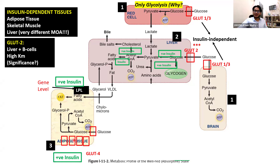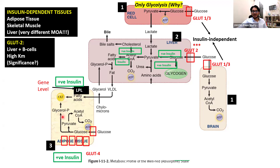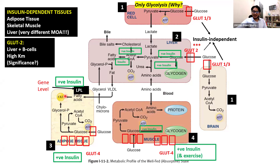The free fatty acids are getting taken up into the adipocyte. At the same time, insulin is telling the adipose tissue to upregulate GLUT4 — the insulin-dependent glucose transporter. GLUT1, 2, 3 are insulin-independent; GLUT4 is insulin-dependent. Because glucose is now being taken up into the adipocyte at an elevated rate because of insulin elevating GLUT4 expression, you have a lot of glycolysis going on. A byproduct of glycolysis is glycerol-3-phosphate. This glycerol gets joined with fatty acids to produce triglycerides, and these triglycerides are stored as fat.